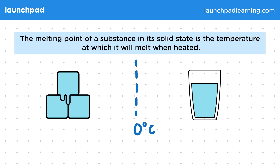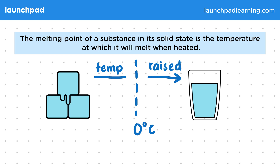The melting point of water is actually used to help define the Celsius scale for temperature. A change of state occurs when the temperature goes from below zero to above zero and ice will melt to form water.